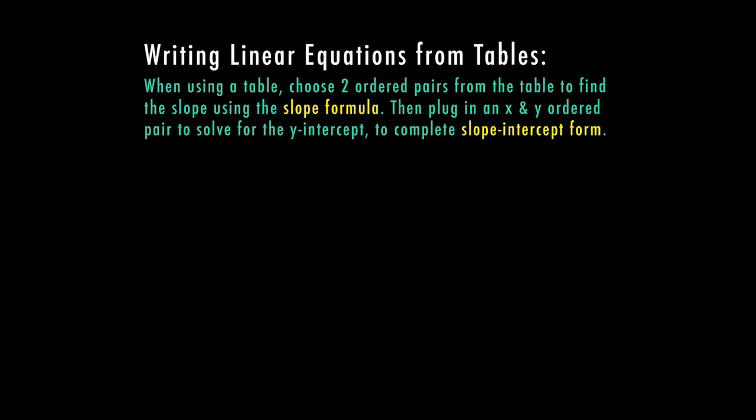When using a table, you want to choose two ordered pairs from the table to find the slope using the slope formula. Then you're going to plug in an x and a y ordered pair to solve for the y-intercept to complete the slope-intercept form.